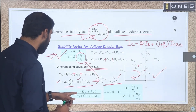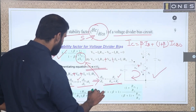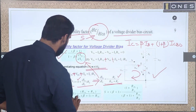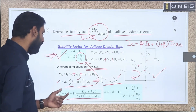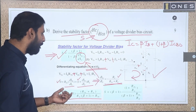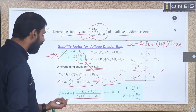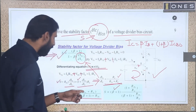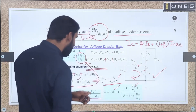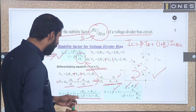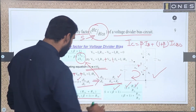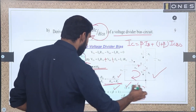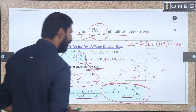Substituting back into the stability factor expression: S equals (beta plus 1) times (RTH plus RE) divided by (RE times (beta plus 1) plus RTH). This is the final stability factor expression for the voltage divider bias circuit.